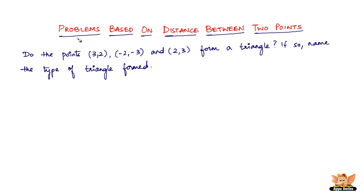In this video, let us continue to solve problems based on distance between two points. The question is: do the points (3, 2), (-2, -3), and (2, 3) form a triangle? If so, name the type of triangle formed.